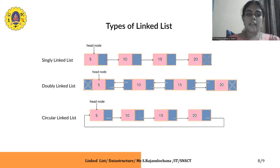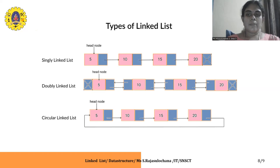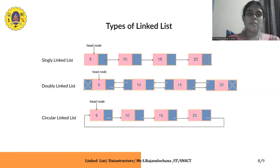Next is the circular linked list. A circular linked list is again a singly or doubly linked list, with one major difference: the first node (header node) and the last node are linked together, so there are no null pointers. If you have reached the last node, you can easily move back to the first node, which is not possible in a singly linked list. In a singly linked list, once you have reached the last node, moving back to the first node is not possible. That is why we use circular linked list.